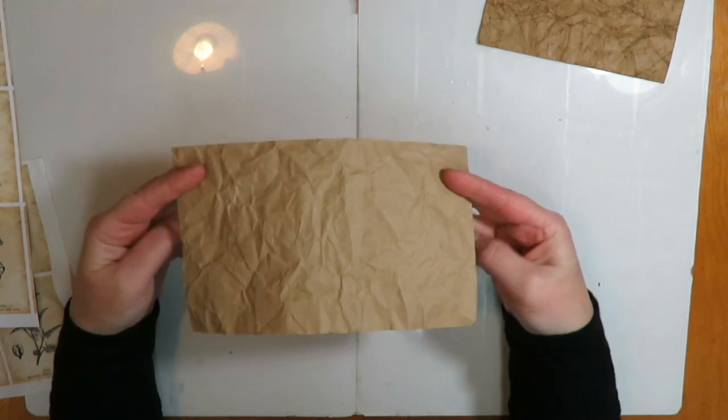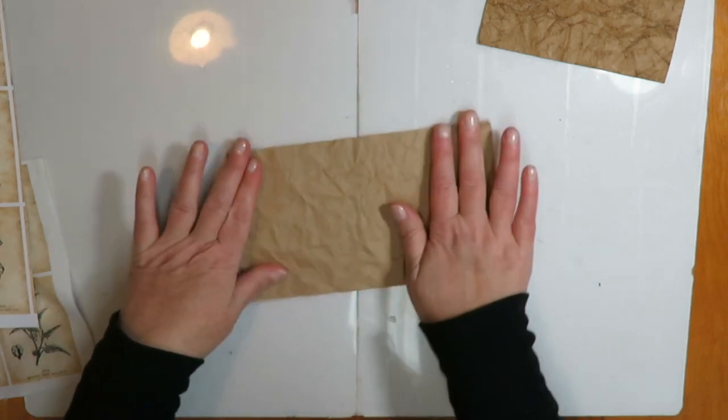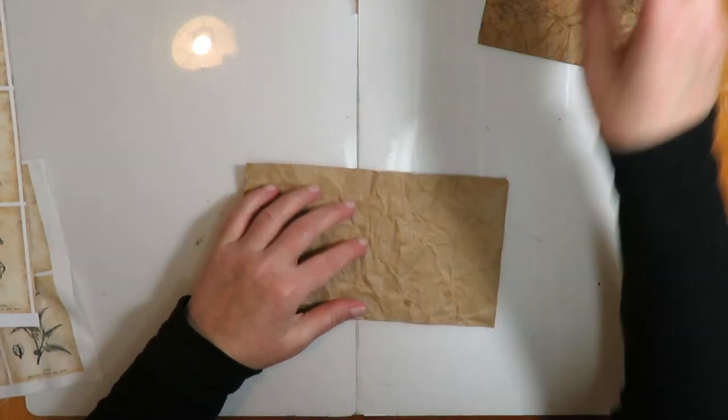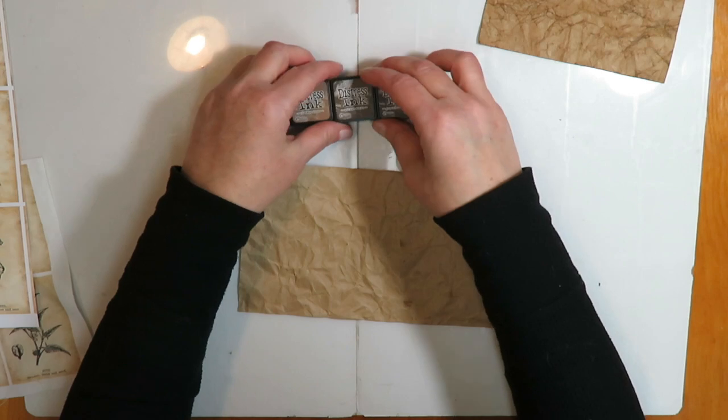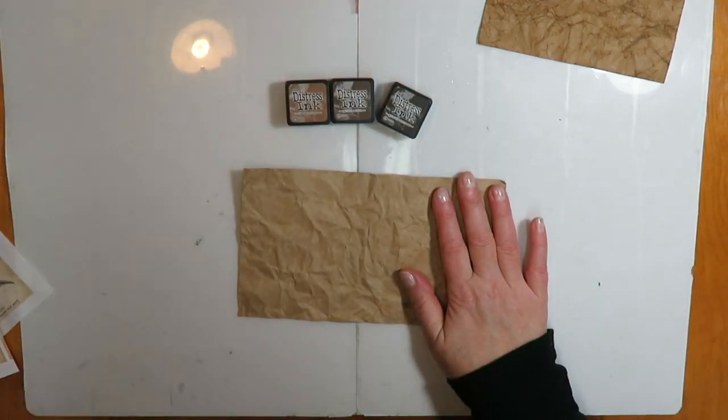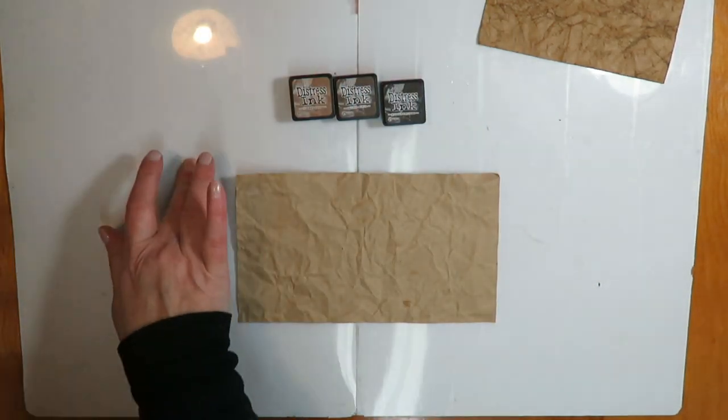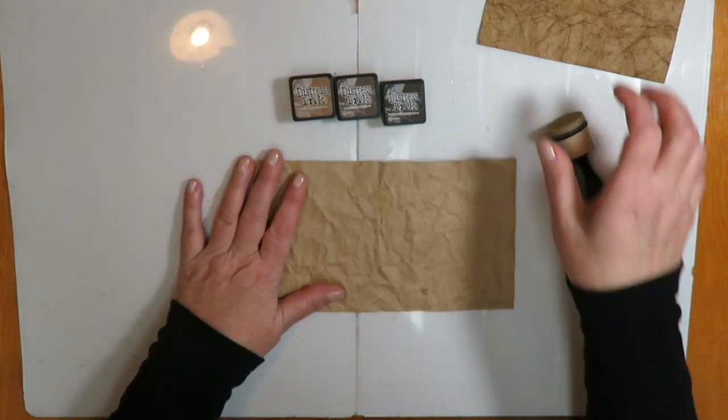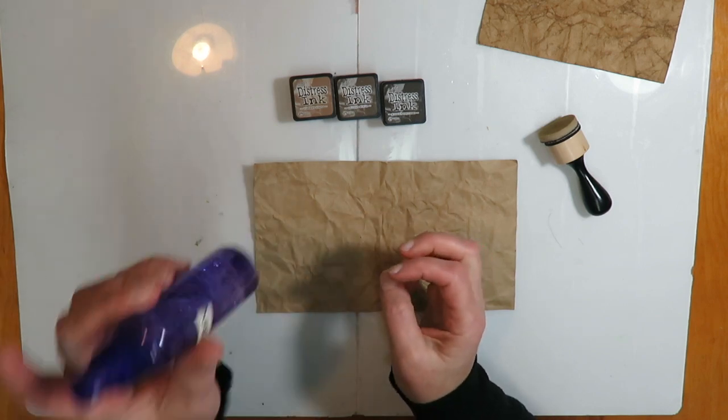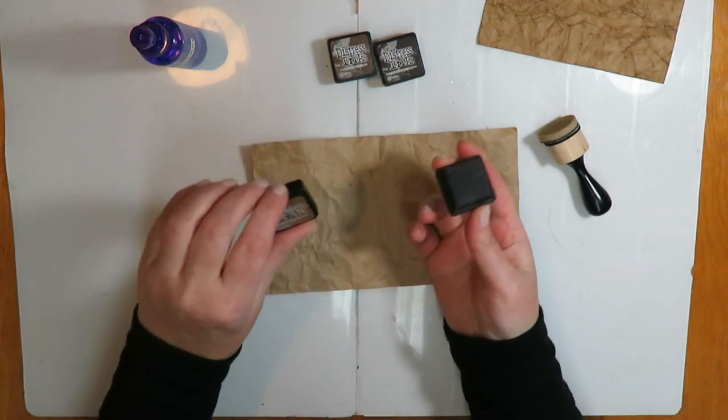After that step and once it is dry, you will have something that looks like this. Here you have your dried glycerin-treated paper, and I grab my distress inks in assorted shades of brown. We have a kitten - well, she's almost a year old now - but she's a thief, and so she stole my blending tool.